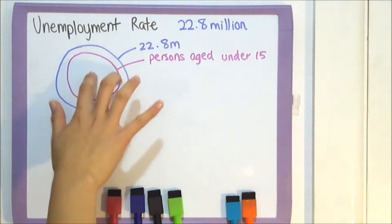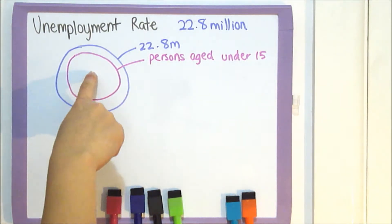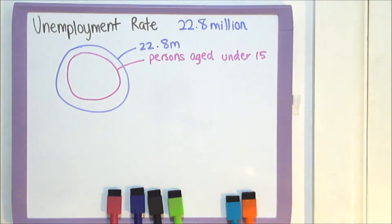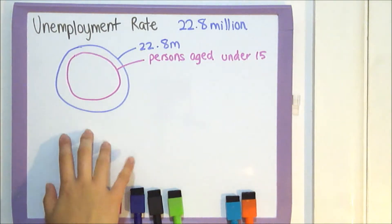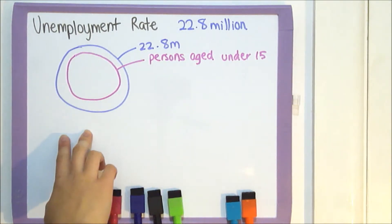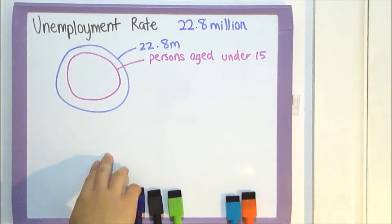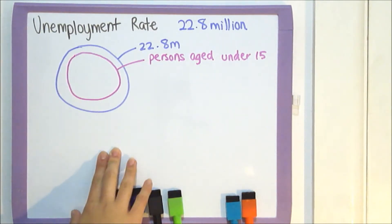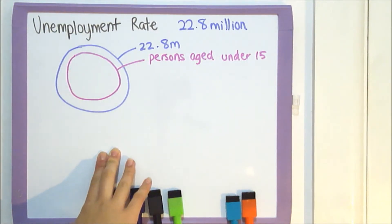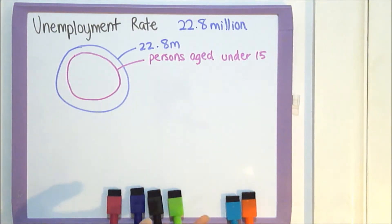Next we have the labour force. The labour force is calculated by the unemployed and the employed. The unemployed is calculated as those unemployed people who are actively seeking work within the span of four weeks.